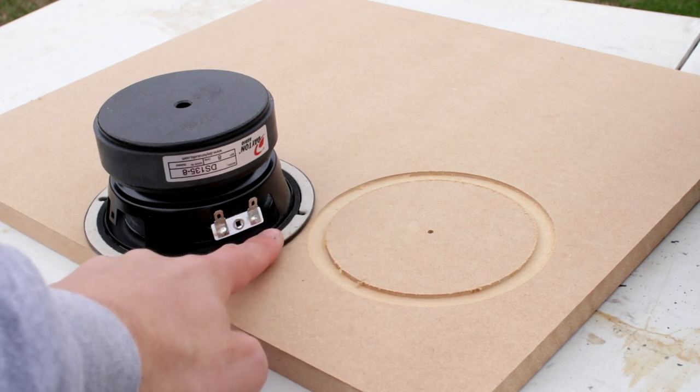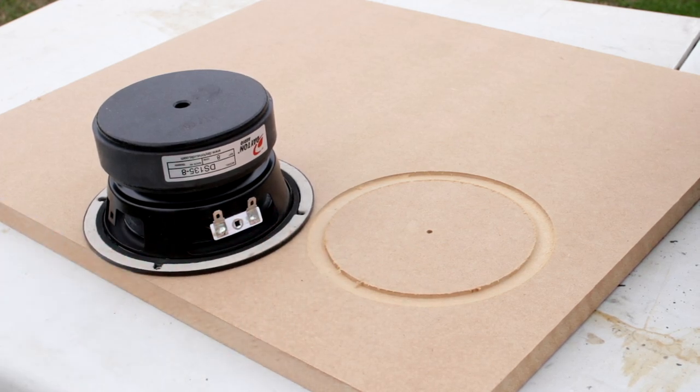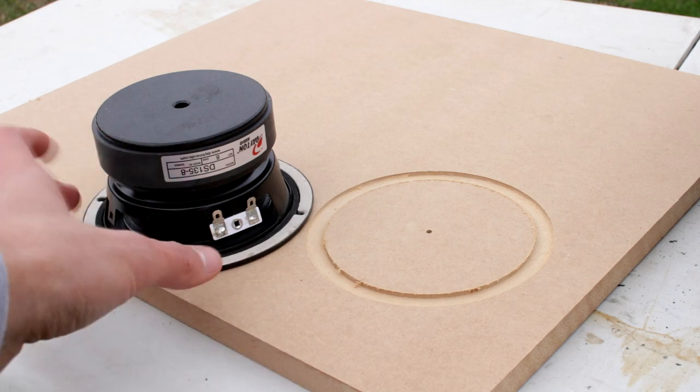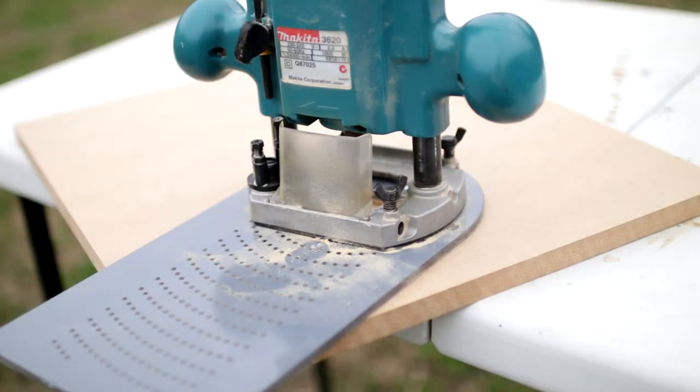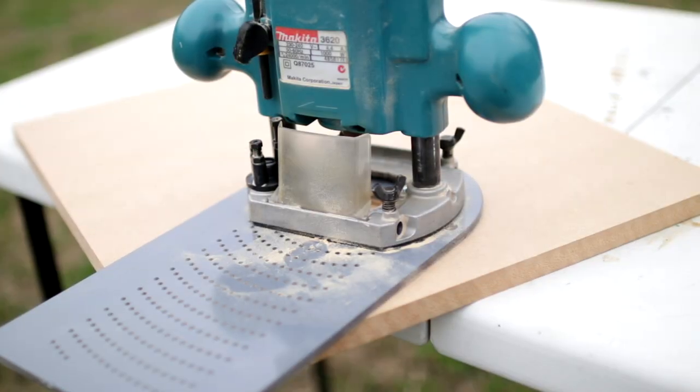So now that we've cut out the edge here for the edge of the woofer, we're going to jump back on the Parts Express website and then figure out the dimensions of the actual cutout for the woofer. So I need four and seven sixteenths of an inch. I've now got that set on the jig.